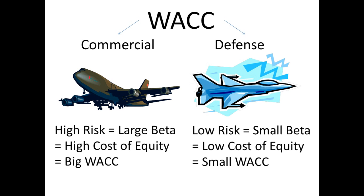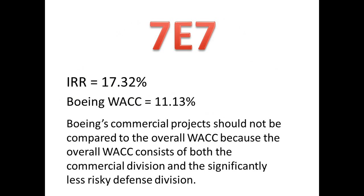We know that the WACC is the cost of capital, and for a company to be profitable, it must only take on projects that have an expected return that is higher than the weighted average cost of capital. Suppose Boeing needed to make a decision on whether or not to accept a project of developing a new commercial aircraft, the 7E7. Boeing's management determined that the expected internal rate of return for this project is 17.32%. Boeing's company weighted average cost of capital is 11.13%, which is significantly lower than the internal rate of return for the 7E7 project.